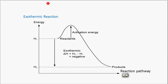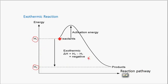In the case of an exothermic reaction, the energy content of the reactants is H1 and the energy content of the products is H2, and H1 is greater than H2. Therefore the enthalpy change, H2 minus H1, is negative. For an exothermic reaction the enthalpy change is negative. The difference between the reactants and the highest point is the activation energy, and the difference between the enthalpy of the reactants and products is the enthalpy change.